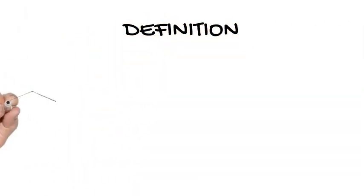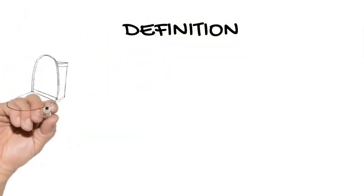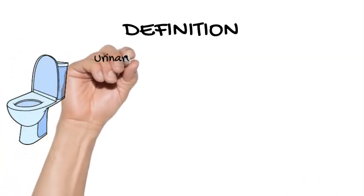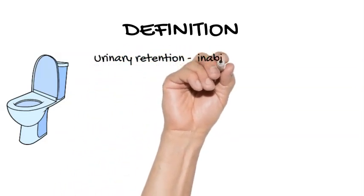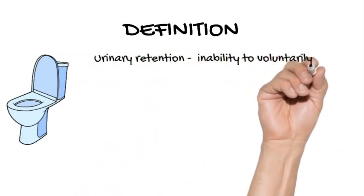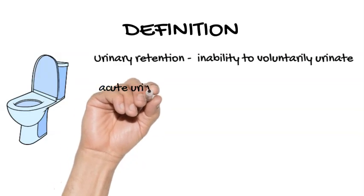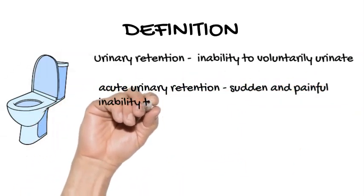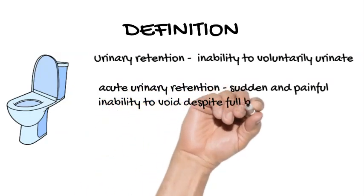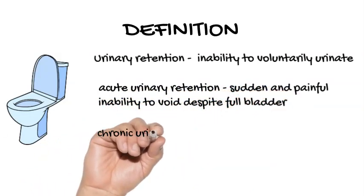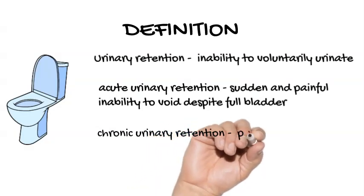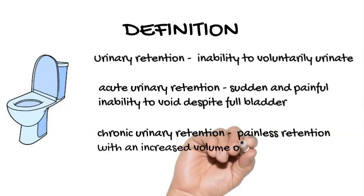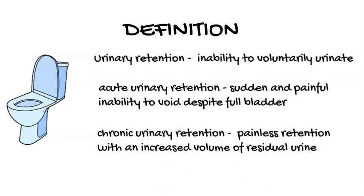Definition. Urinary retention is the inability to voluntarily urinate. Acute urinary retention is the sudden and often painful inability to void despite having a full bladder. Chronic urinary retention is painless retention associated with an increased volume of residual urine. Patients with urinary retention can present with complete lack of voiding, incomplete bladder emptying, or overflow incontinence. Complications include infection and renal failure.